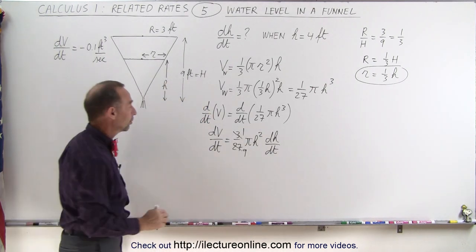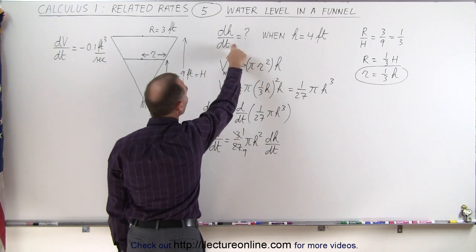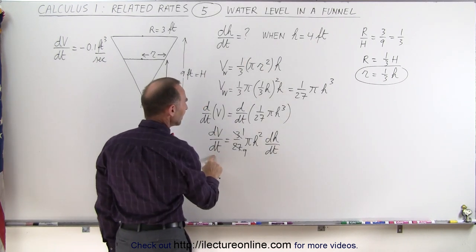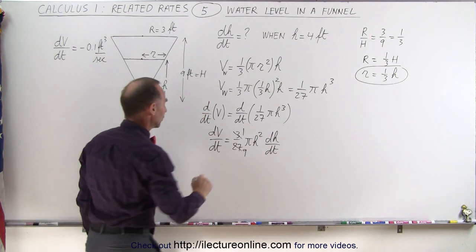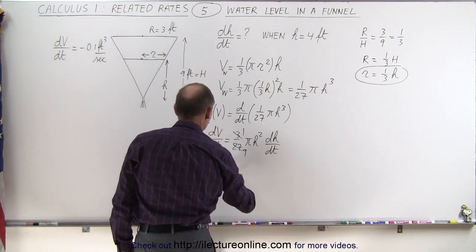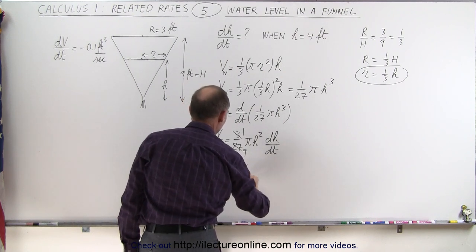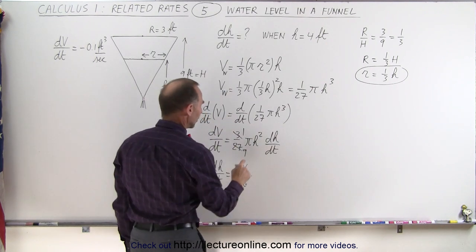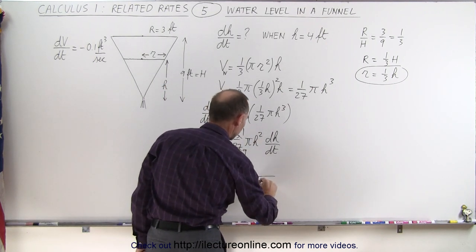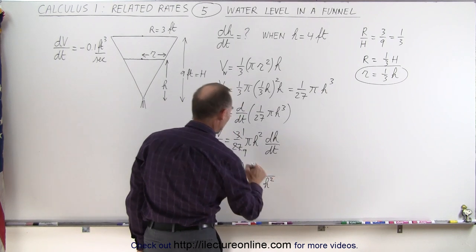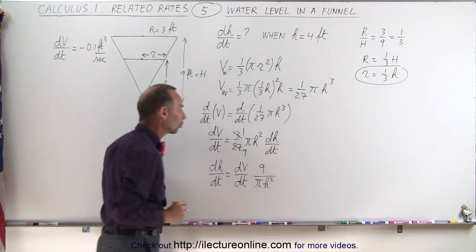So now we have a relationship between dv dt and dh dt. Since we're looking for dh dt and we're given dv dt and h, we can solve for dh dt. That means dh dt equals dv dt times, notice we have a pi h squared that will go to the denominator and a 9 in the denominator that goes in the numerator. So we have 9 divided by pi h squared. Now all we have to do is plug in the values.